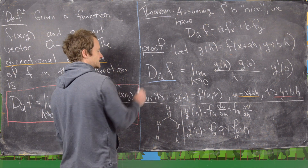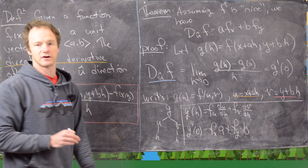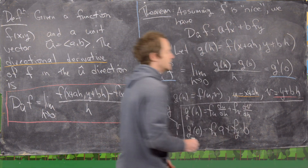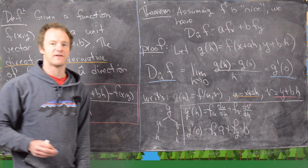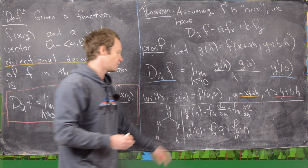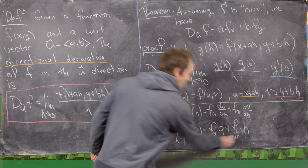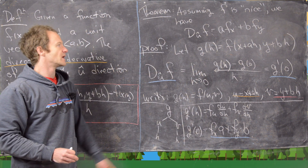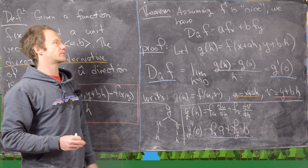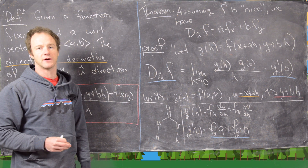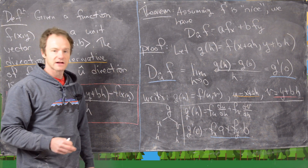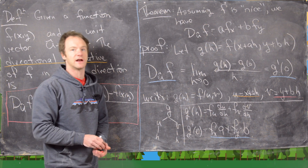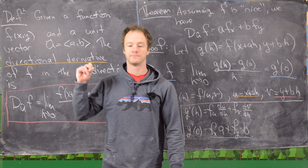Reading from top to bottom: the directional derivative equals g prime evaluated at zero, and we found that g prime at zero equals a·f_x plus b·f_y, which proves our theorem. Now let's clean up the board and look at an example.